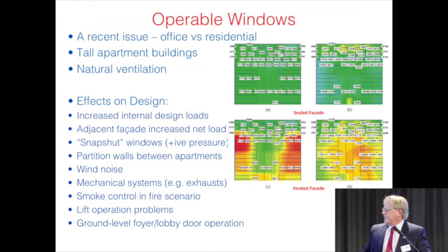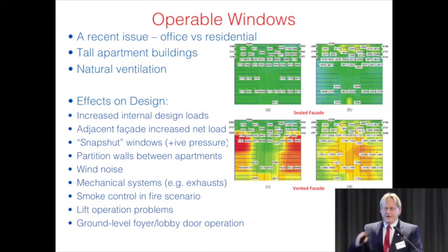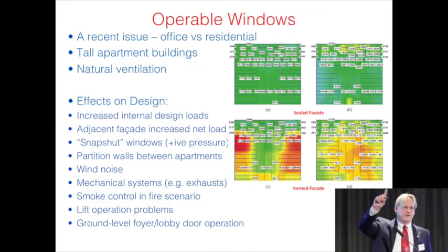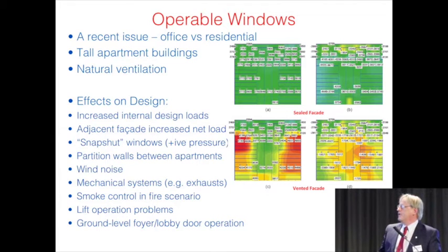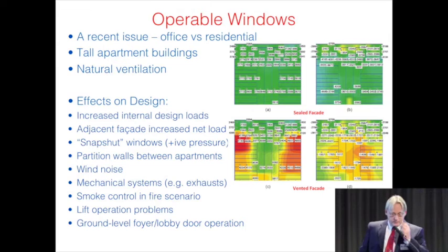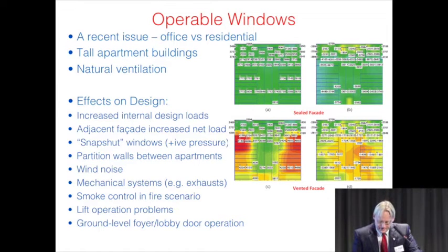Other issues with tall residential buildings include mechanical exhausts — kitchen exhausts vented through the side of the building will face positive pressure for roughly half of all wind directions, pushing smells back into the apartment; the solution is running exhausts up through a chase to the roof for a constant negative pressure environment. Additional concerns include ground floor lobbies, foyer pressurisation, lift operation under differential pressures, and smoke control — fire tests conducted on still days may not account for wind-driven smoke behaviour in stairwells.